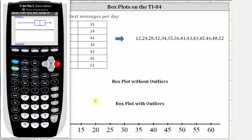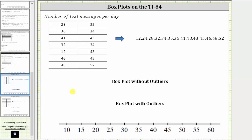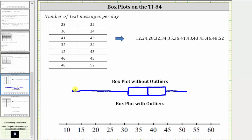Let's go ahead and sketch this box plot. The minimum is 12, quartile one is 32, the median is 38.5, quartile three is 45, and the maximum is 52. So we have the box from quartile one to quartile three, a vertical line through the median, and then we have the tail on the right from quartile three to the maximum. On the left, we have the tail from quartile one to the minimum. Sometimes you will see small vertical bars at the end of the tails or whiskers.